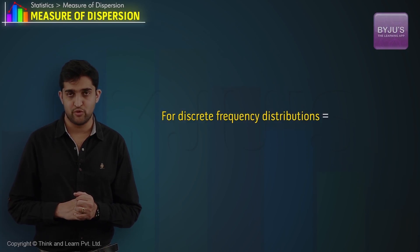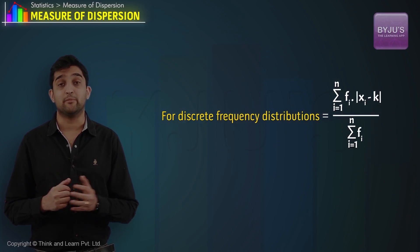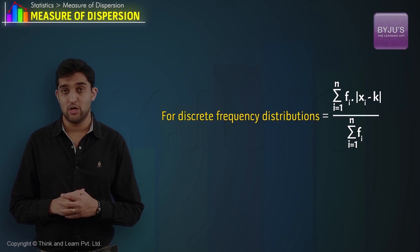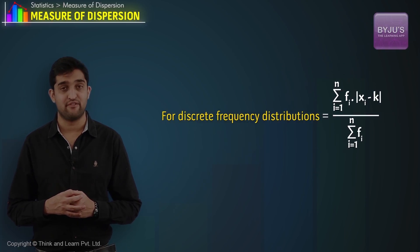For discrete frequency distributions, the expression will be given by summation fi|xi-k| divided by summation fi.